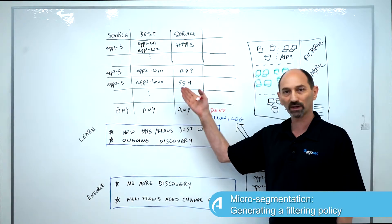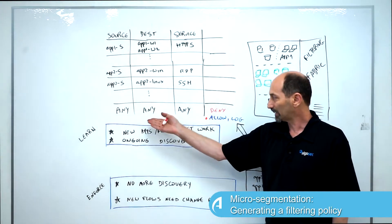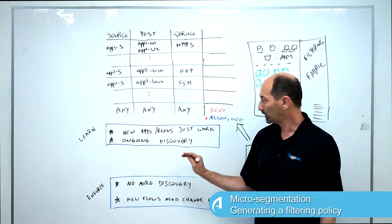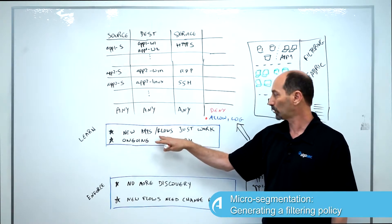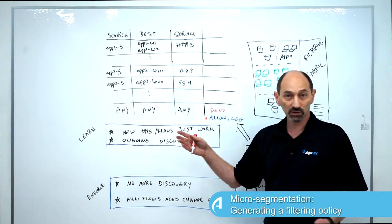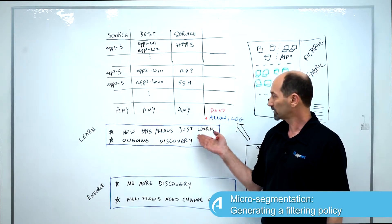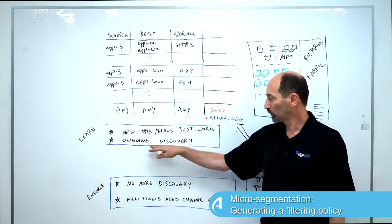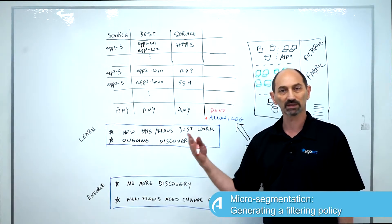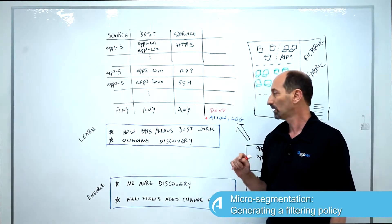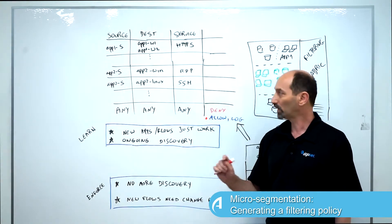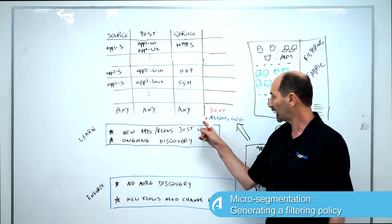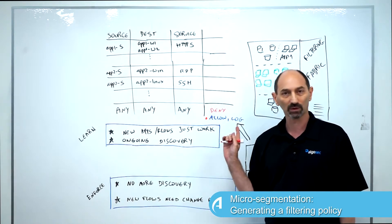But while you're doing this, while the policy is allowing by default, you're really in a learning phase. By this I mean, all the new flows that application developers require just work because the default rule says allow. So everything just functions and you're doing ongoing discovery. You keep discovering new things and you update the specific rules until the point where you've written enough rules, you've discovered enough applications, that this final allow rule is not generating any more logs.